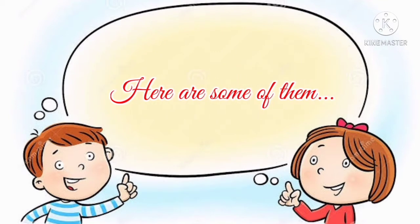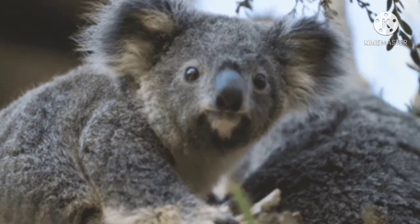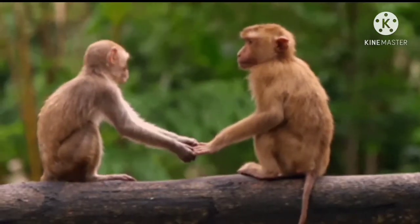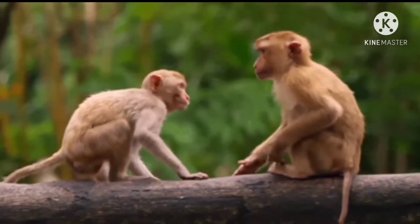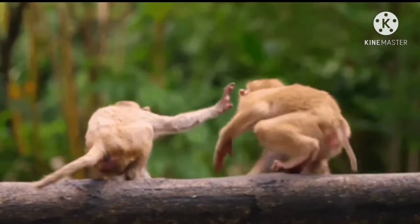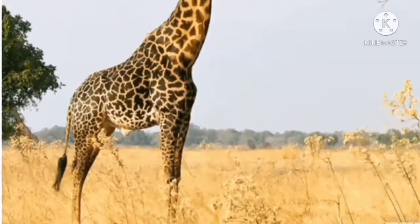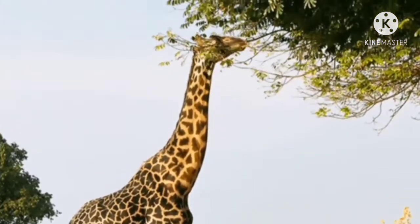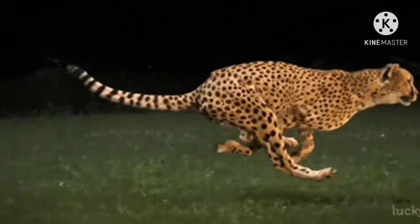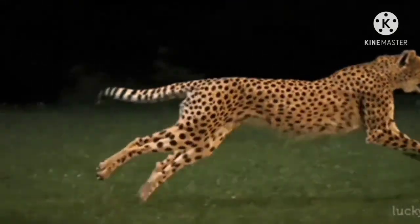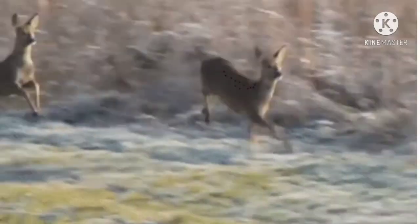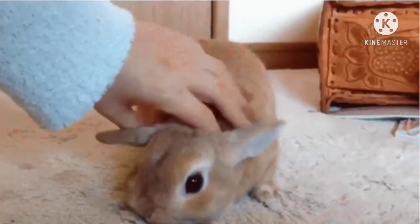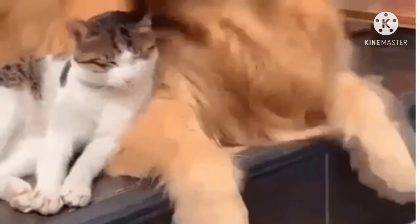Here are some of them. Koalas, spiders, and monkeys are some animals that live in trees. Some animals that live on the ground include giraffe, cheetah, deer, and some that we even took home, like rabbits, dogs,